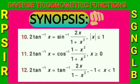Twelfth point: 2tan⁻¹(x) = tan⁻¹(2x/(1-x²)), where -1 < x < 1.